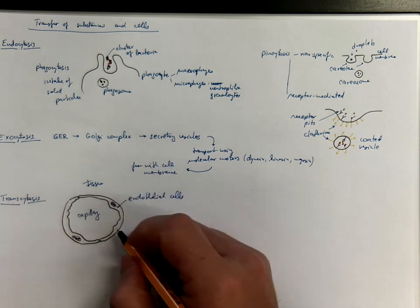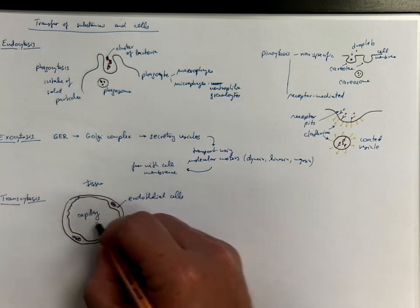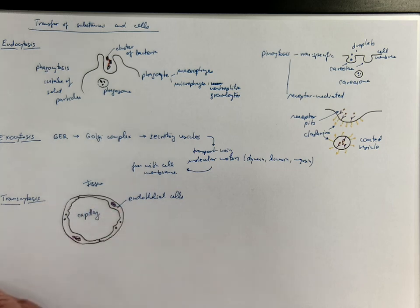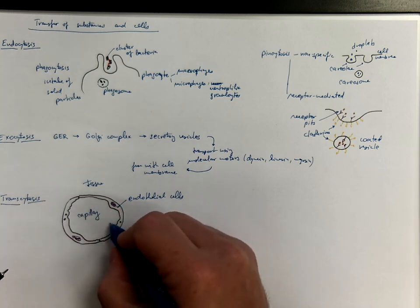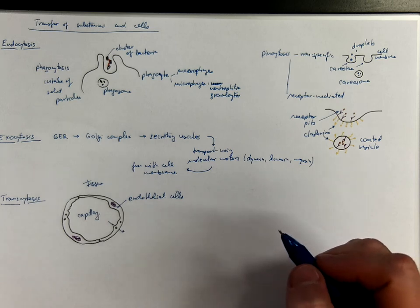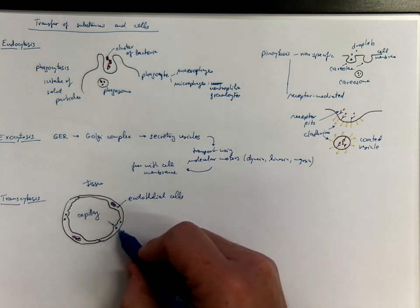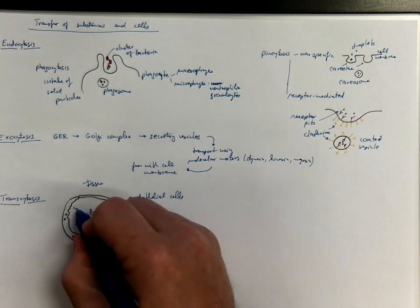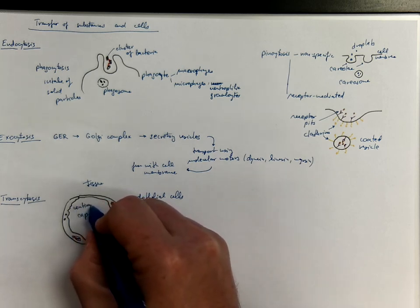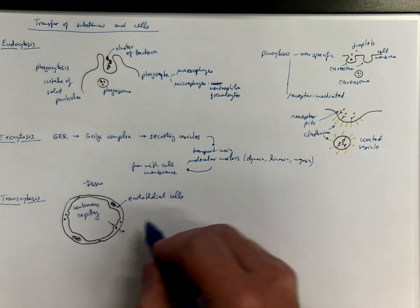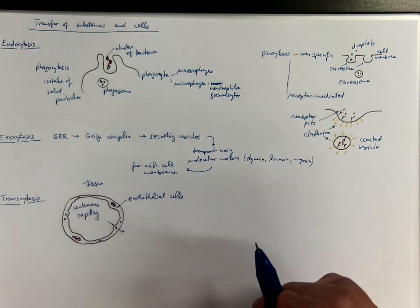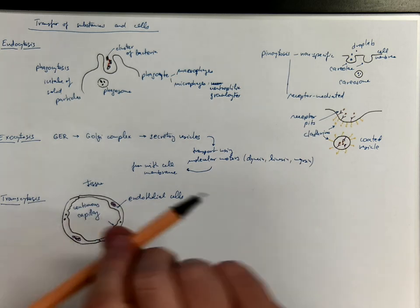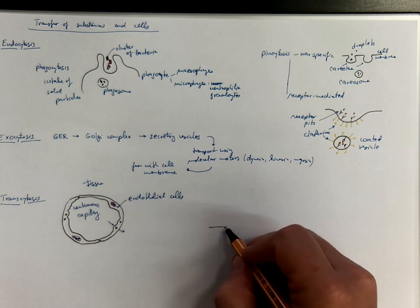The endothelial cells form transcytotic vesicles, and they are taken in and released outside. So the substances are transported across this continuous capillary as the type with lowest permeability.